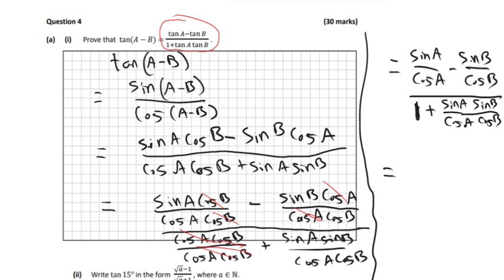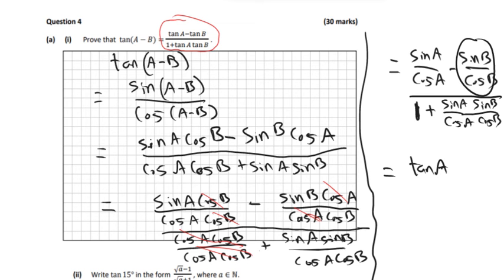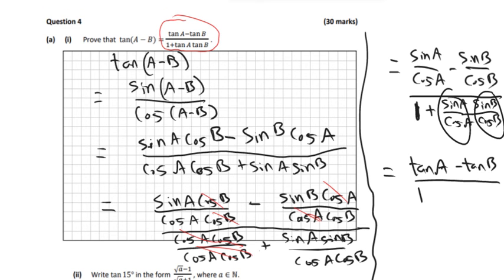So we're almost done. Sin A over cos A is just tan A, because sin over cos is always just tan. Sin B over cos B is just tan B, so it's minus tan B. Then the denominator is 1 plus tan A tan B. And that's what we were asked to prove.